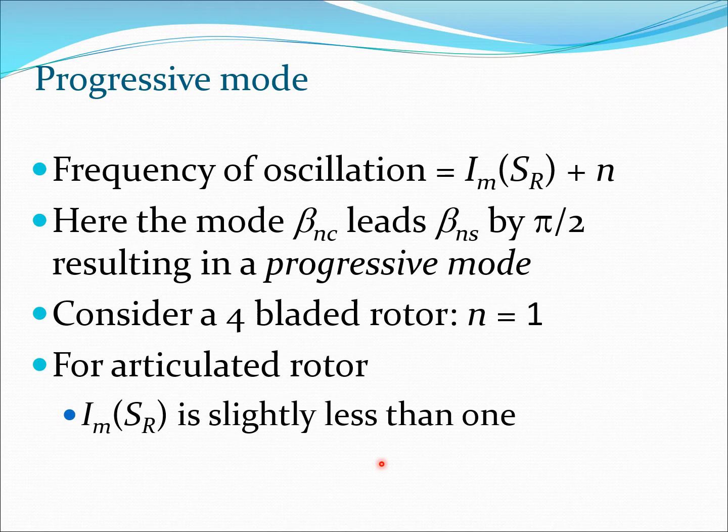The frequency for oscillation of this mode is going to be the imaginary part of SR. I am going to call this sometimes as just imaginary SR plus N. So here the mode beta NC leads beta NS by pi by 2 resulting in a progressive mode, progressive because there is a lead here.